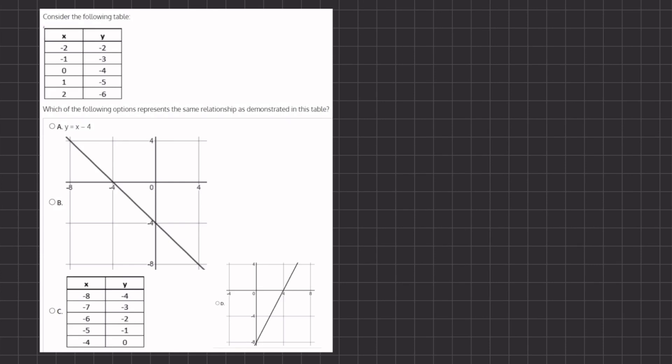In this problem we are given a table and we want to see which of the following options represents the same relationship as the table given. In order to better understand this table, we are going to find the point slope form, which means we first have to find the slope. To find the slope we have to pick two points and plug them into our slope formula.